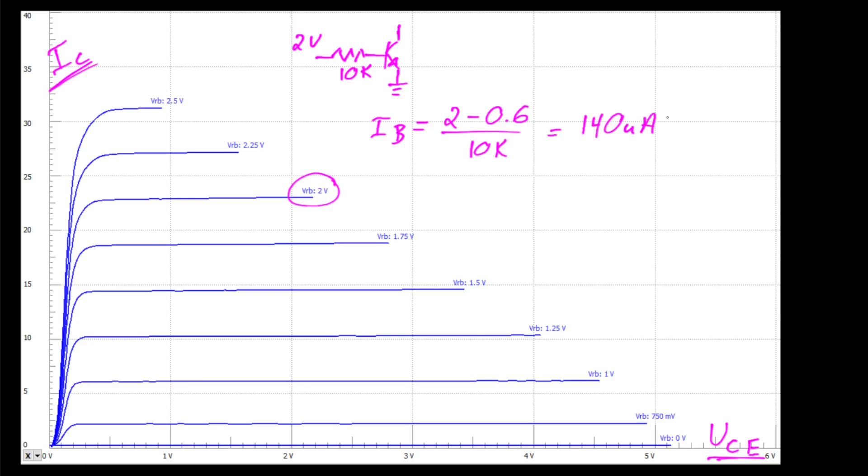So our base current is approximately 140 microamps. Now I say approximately because this number right here is an estimate. Typically when a transistor is turned on, there's one diode drop and we're assuming that's 0.6 volts. It might be a little bit more, it might be a little bit less, but as I said, it's an estimate.